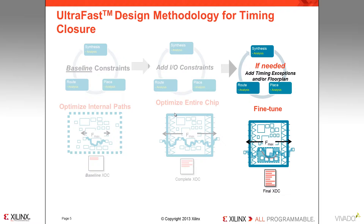Once you have a good, clean set of I/O constraints, proceed to implementation to ensure that after place and route, I/O timing is still clean. The final stage of the ultra-fast design methodology is to fine-tune constraints in areas of the design that are really hard to meet timing. You may have to run place and route to find these issues. In this stage, you may have to add or modify clocks, add exception constraints, add placement constraints, or the design might need minor floor planning in order to meet timing. Following this methodology will result in speedier convergence for timing constraints that are of sign-off quality — not only complete but, more importantly, correct.